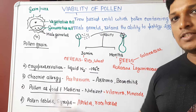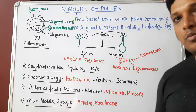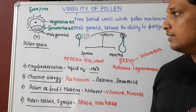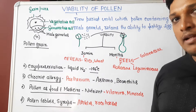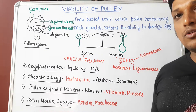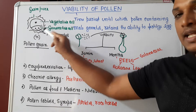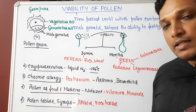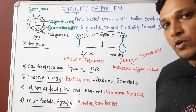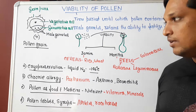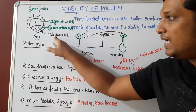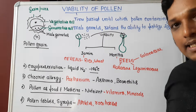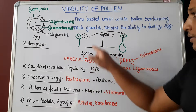Today's topic is viability of pollen. A pollen grain is a haploid cell formed due to microsporogenesis. It has a vegetative cell and a generative cell. The generative cell contains male gametes, which can also be called sperm, and these are going to fertilize the egg.